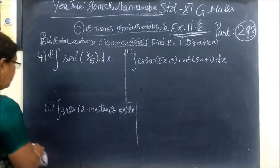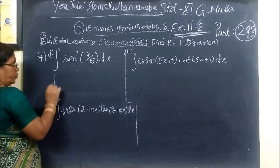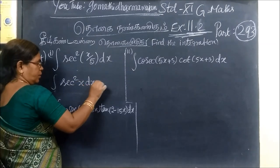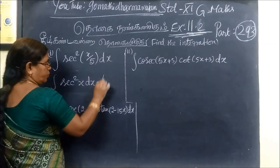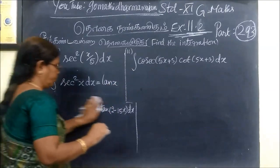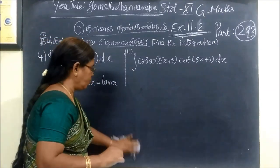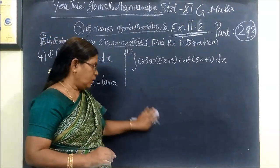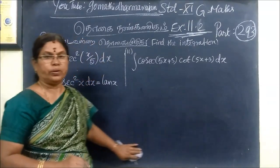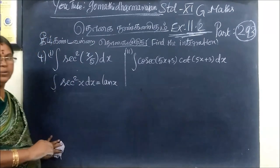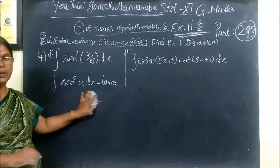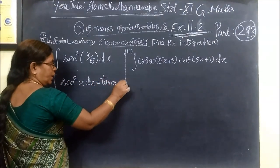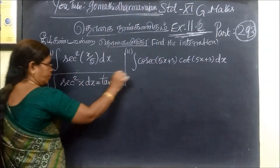Now, this is the formula. We know that the integral of sec square x dx equals tan x. This question is also important. This is the formula. The integral of sec square x dx equals tan x plus C. This is the formula.